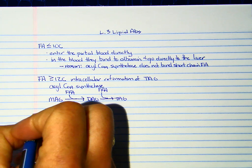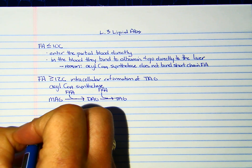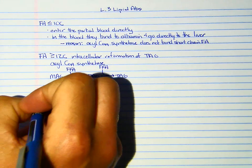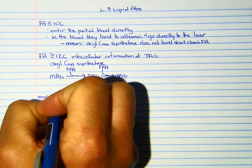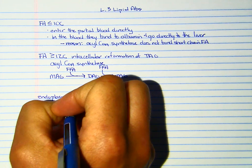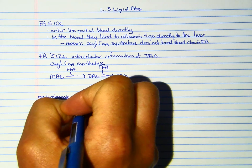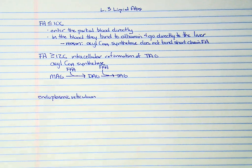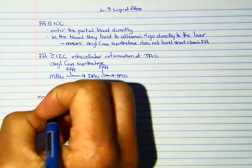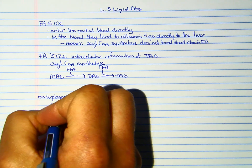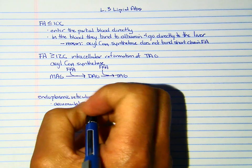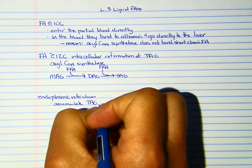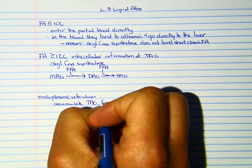That TAG is going to accumulate in the endoplasmic reticulum. So we accumulate TAG. We're also going to accumulate fat-soluble vitamins.